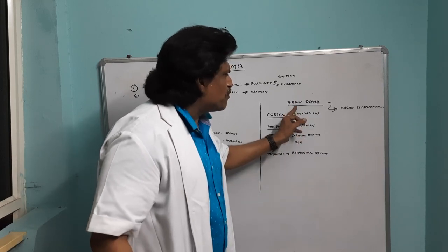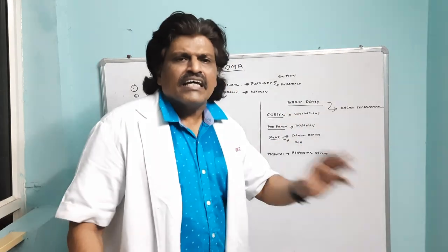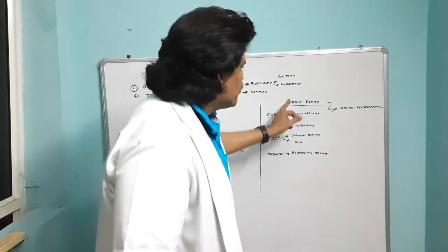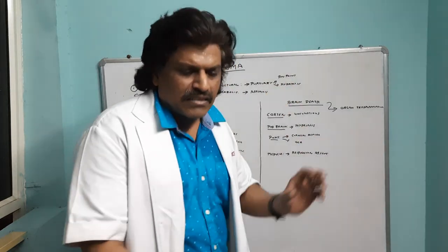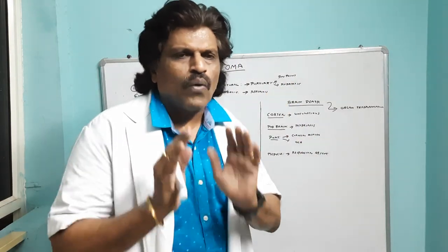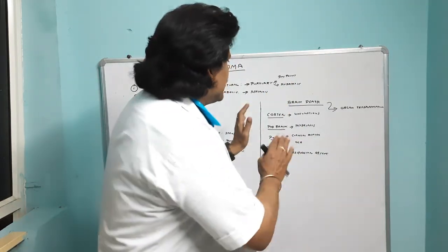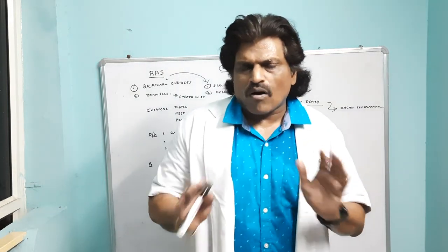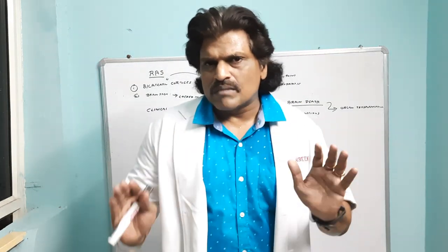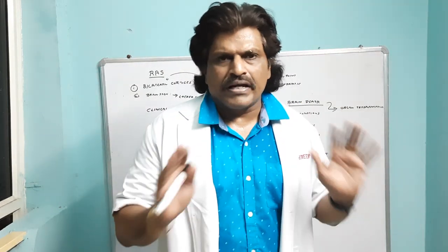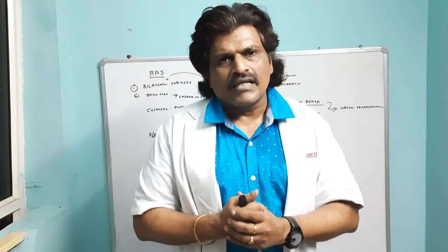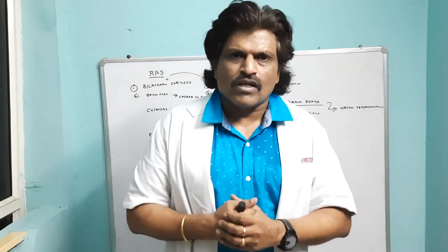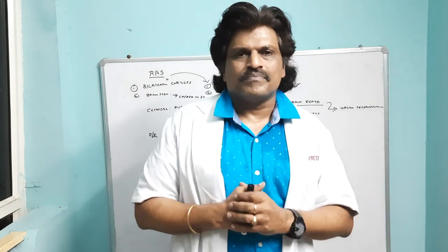The main difference between brain death and death: in death, the heart is also not functioning; in brain death, the heart is still functioning and you can feel the pulse. I hope I have clarified all the basic concepts of coma and brain death. Thank you for being a wonderful audience — I'll keep continuing these neurology lectures.